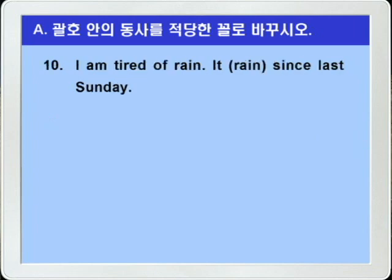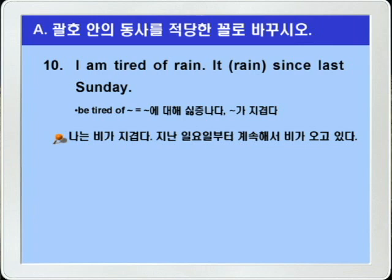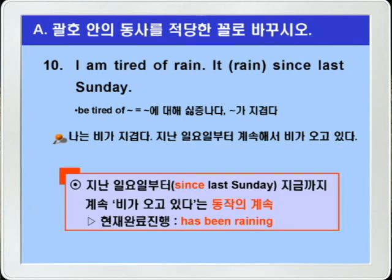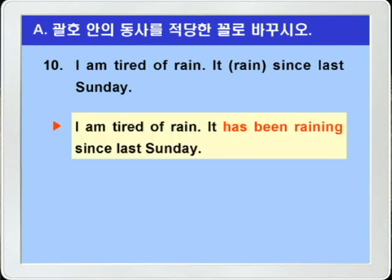10번. 'I am tired of rain. It rain since last Sunday.' be tired of ~하면 '~에 질증나다', '~가 지겹다' 이런 의미니까, 나는 비가 지겹다. 'It rained since last Sunday' 지난 일요일부터 계속해서 비가 오고 있다. 앞 문장의 rain은 비라는 명사고, 뒷 문장의 rain은 '비가 오다' 이렇게 동사입니다. 비가 지난 일요일부터 내려서 계속의 의미의 현재완료를 써야겠는데, 여기서 rain은 동작을 나타낸 동사니까 현재완료진행형을 쓰는 게 좋겠습니다. 따라서 정답은 동사 rain은 has been raining 이렇게 바꾸면 되겠습니다. 정답: 'I am tired of rain. It has been raining since last Sunday.'